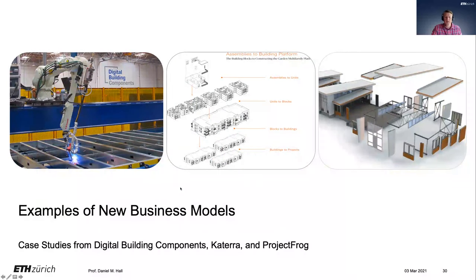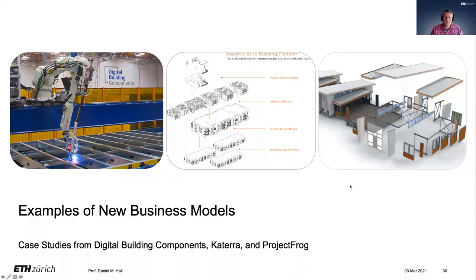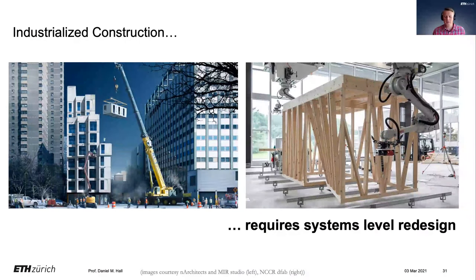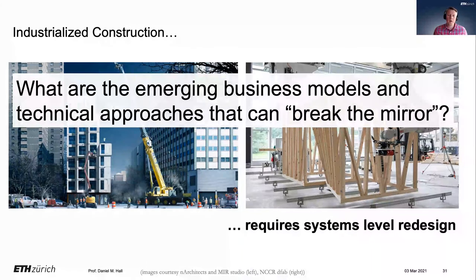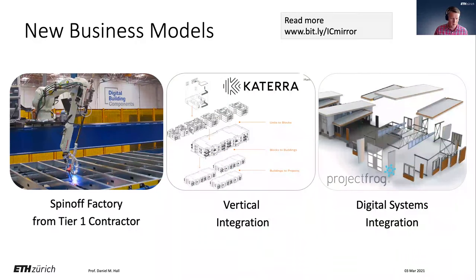I'll present three case studies of how companies are using new business models to achieve industrialized construction. First, an example of Digital Building Components — a spinoff from an existing construction company. Second is Katerra, which I'll introduce briefly this week and cover more next week. Third is Project Frog, which I've mentioned before. Industrialized construction requires a systems-level redesign — we need to redefine the product structure and ask: what are the emerging business models that can break the mirror between our knowledge of tasks and products?